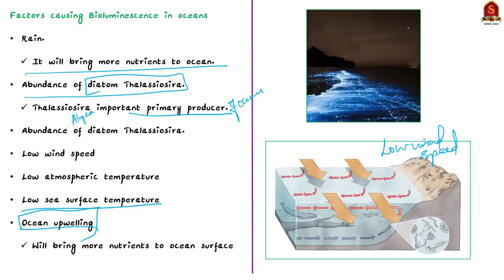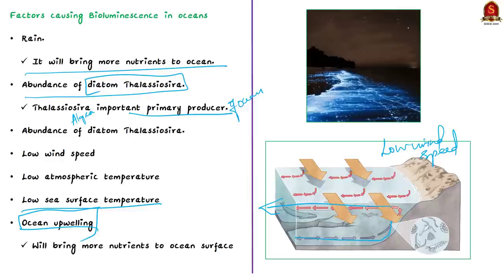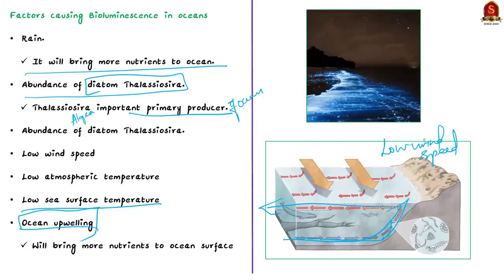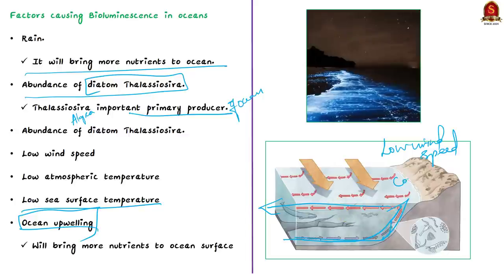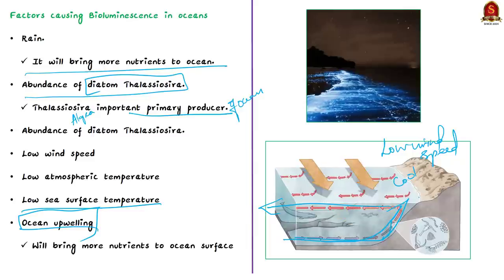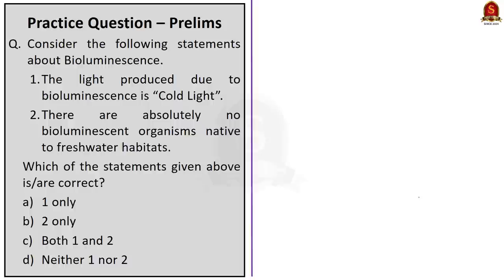The presence of ocean upwelling also aids the bloom of Noctiluca scintillans. Ocean upwelling occurs when surface ocean currents are diverging or moving away from each other — as surface water diverges, deeper water is brought to the surface to replace it, creating upwelling zones. The upwelled water is cool and rich in nutrients, and it is this increase in nutrient content that results in the bloom of Noctiluca scintillans. In this discussion, we saw about the National Center for Coastal Research, what bioluminescence is, and the factors that aid in its occurrence.